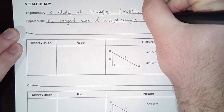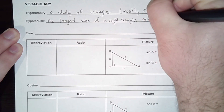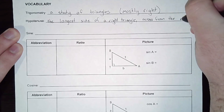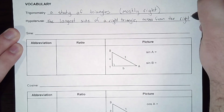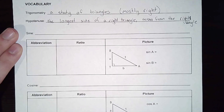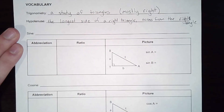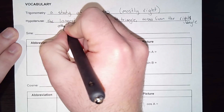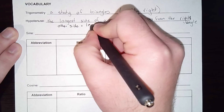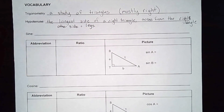It's also worth saying that the hypotenuse is across from the right angle. The hypotenuse is the longest side; the other sides are what we call legs. Those legs are the two sides that form the 90-degree angle.